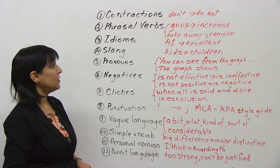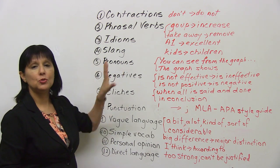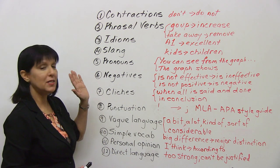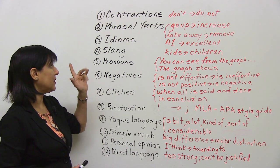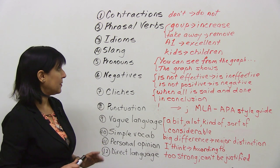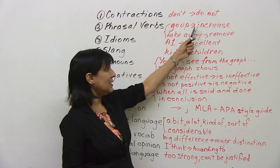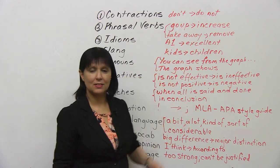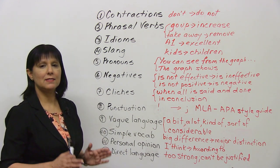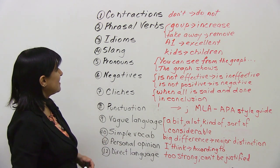First of all, avoid using contractions — don't use them at all. Don't say 'don't,' say 'do not.' Don't say 'isn't,' say 'is not.' That's academic English.